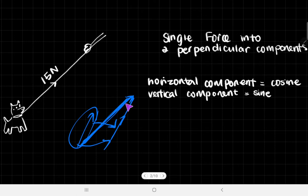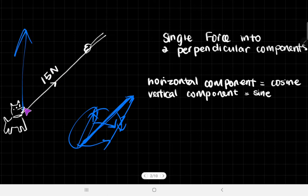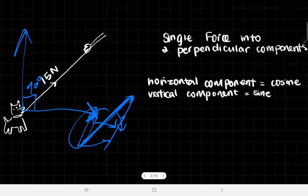You can think of resolving as the reverse process of getting the resultant force. You have this resultant force and you split it back into the original things — that's the basis of what resolving is. It's splitting up a single force into two different components, resolving it into two perpendicular components, 90 degrees apart from each other.